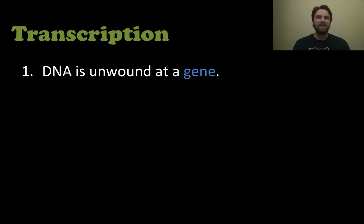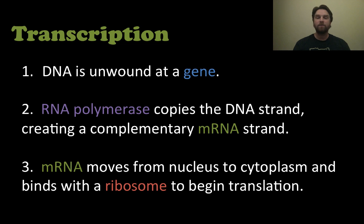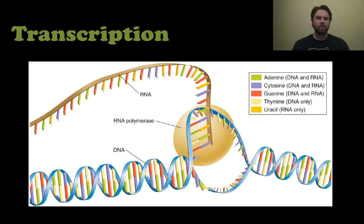Let's look at the steps of transcription. First, the DNA is unwound at a specific portion — not the entire double helix as in DNA replication, but just a specific section around the gene we're trying to make a protein from. RNA polymerase comes in and copies the DNA strand, creating a complementary messenger RNA strand. Then the messenger RNA moves from the nucleus to the cytoplasm and binds with the ribosome to begin translation.